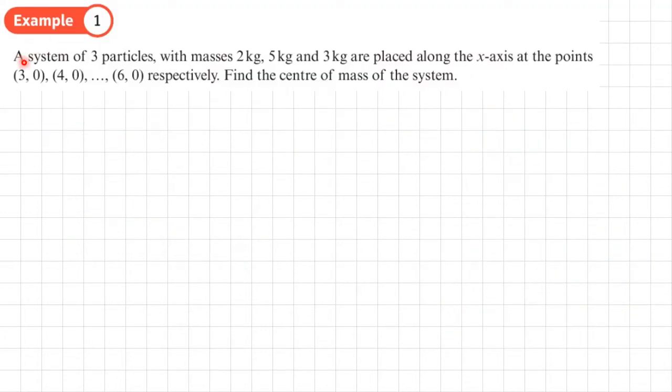Example one. A system of three particles with masses 2, 5 and 3 kg are placed along the x axis at the points (3,0), (4,0) and (6,0) respectively. Find the center of mass of the system. So the first thing I'm going to do is to start with a diagram.